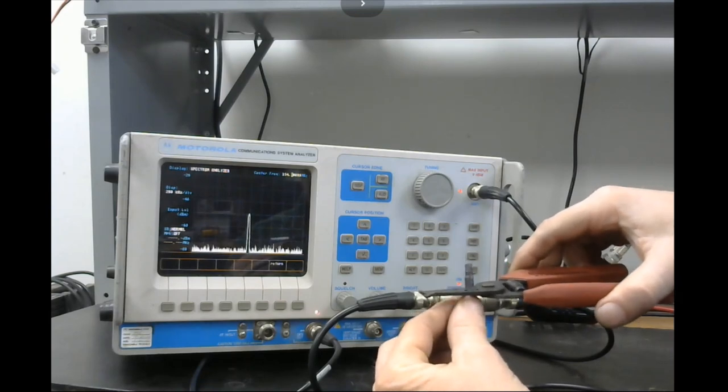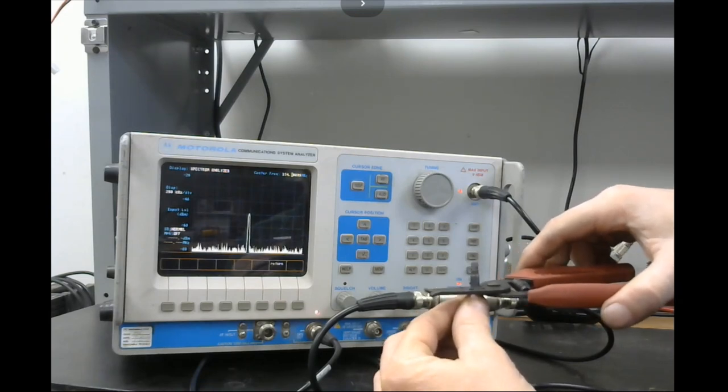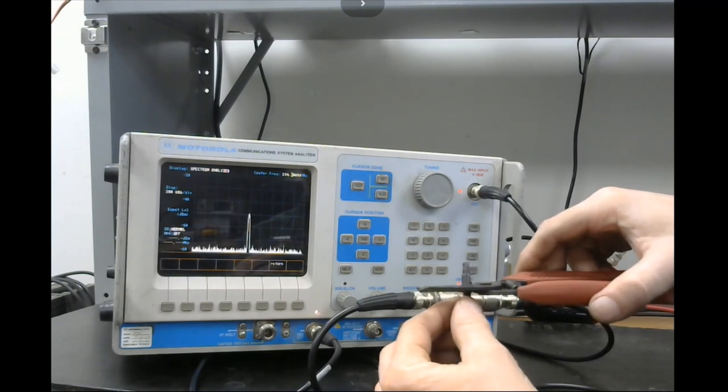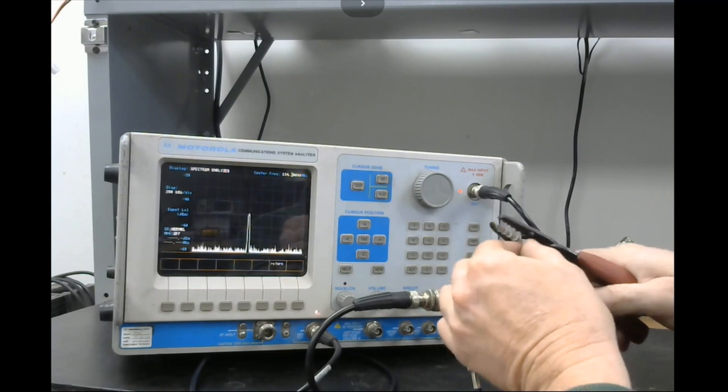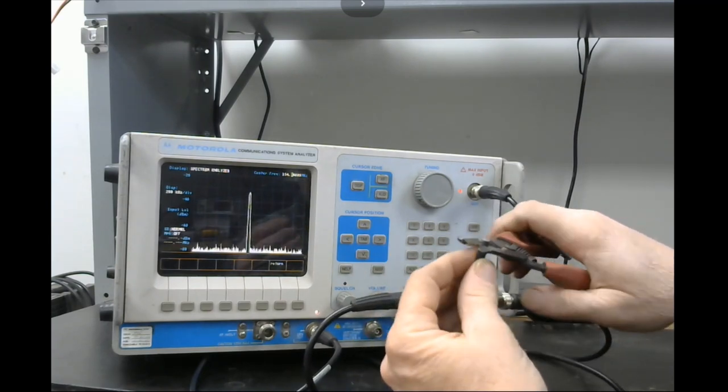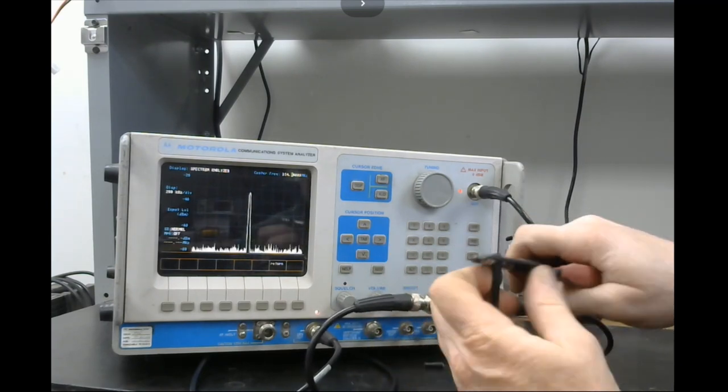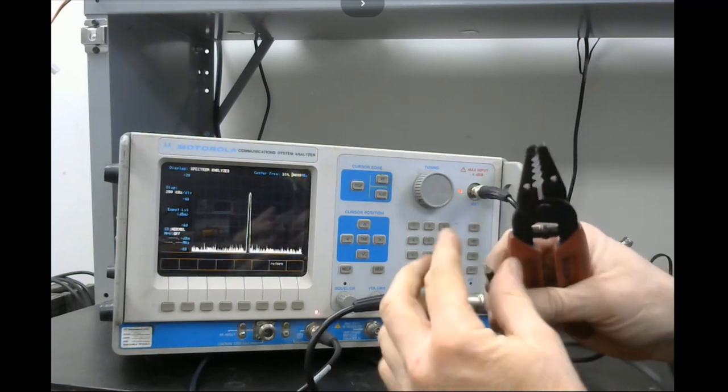When you finally get to your target one you want to not cut directly across on that one. When you get like what you would think was one step away, go ahead and cut it off cleanly and then come around and strip off your shield.